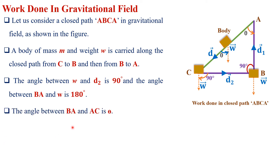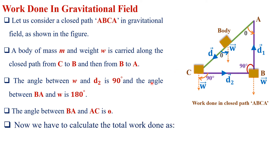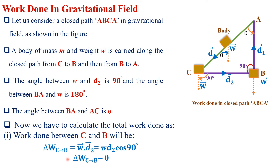The angle between path BA and path AC is theta. Work done from C to B equals w dot d2, which equals w·d2·cos 90°. Since cos 90° equals zero, work done between C and B is equal to zero.